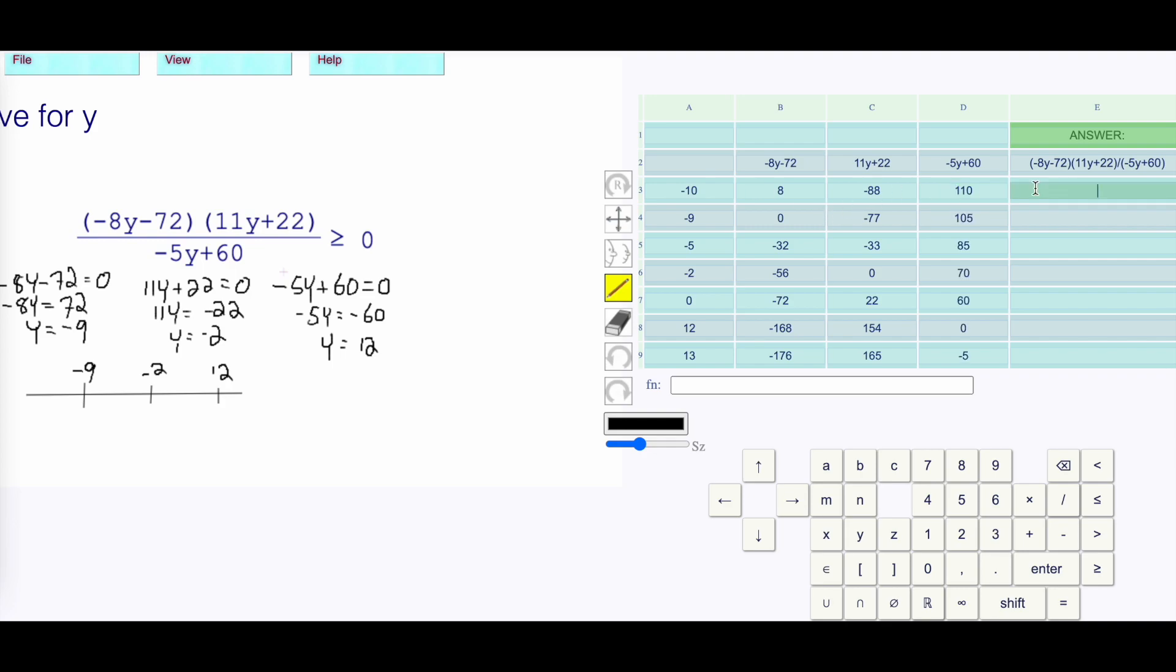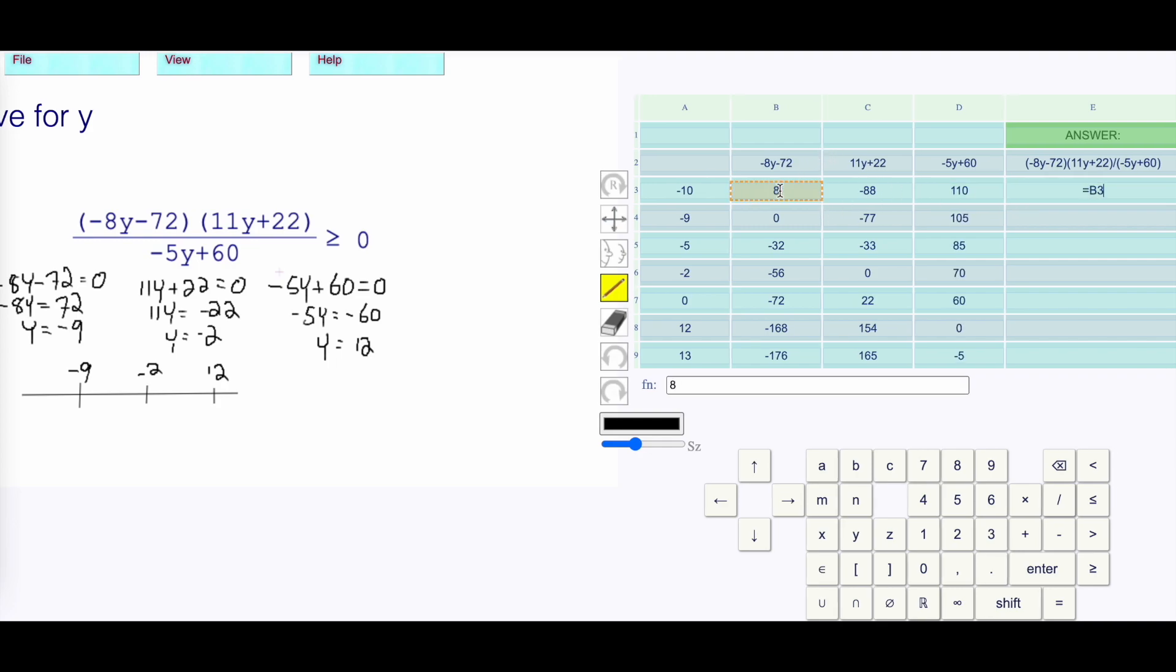I want to see what happens when I multiply the two tops divided by the bottom. Here we get a negative. If I fill that down, we have negative, 0, positive, 0, negative. This is really undefined, positive.